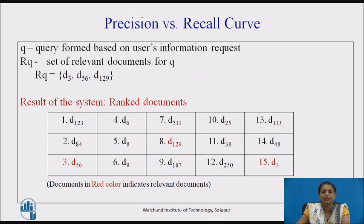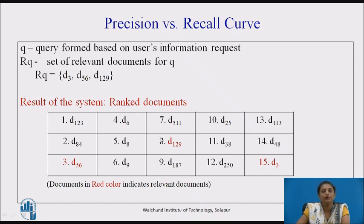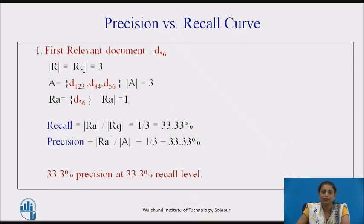Consider this example. For a given information request there are 3 relevant documents and the result of the system is as shown. So 15 documents are retrieved in the answer set. Now let us calculate the precision and recall.